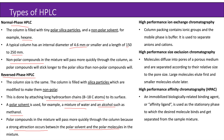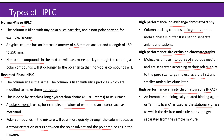The molecules which readily dissolve into the mobile phase will come out of the column at a much faster speed. Another type is ion exchange, where the column packing contains ionic groups and the mobile phase is a buffer — used to separate anions and cations. Size exclusion HPLC can also be used, where molecules diffuse into pores of a porous medium and are separated according to their relative size to the pore size; large molecules elute first and smaller molecules elute later. High performance affinity chromatography uses an immobilized biologically related binding agent or affinity ligand as the stationary phase, to which the desired molecule binds and gets separated from the sample mixture.